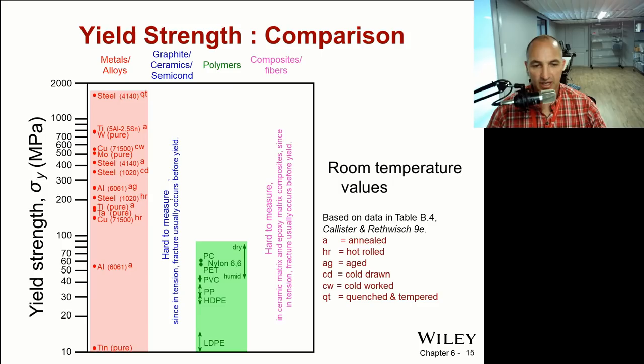Just like Young's modulus, we can look at values for yield strength. Steels are all over the map with yield strength. Some of them are low like 1020 steel, and some are very high like steel 4140 quenched and tempered molybdenum steel. It's even higher than tungsten, very strong, very high yield for that one.